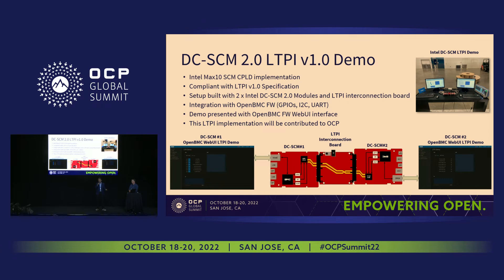On the left-hand side, you have a web UI view of the left-hand DCSCM OpenBMC. On the right-hand side you have the same view of the right-hand OpenBMC running on the second DCSCM module. Those two OpenBMC implementations actually communicate with each other over LTPI. All the interfaces are used natively by OpenBMC and then tunneled through LTPI and reconstructed on the other side — the other BMC is not even aware of LTPI being there. So they think they are communicating with each other over native interfaces.